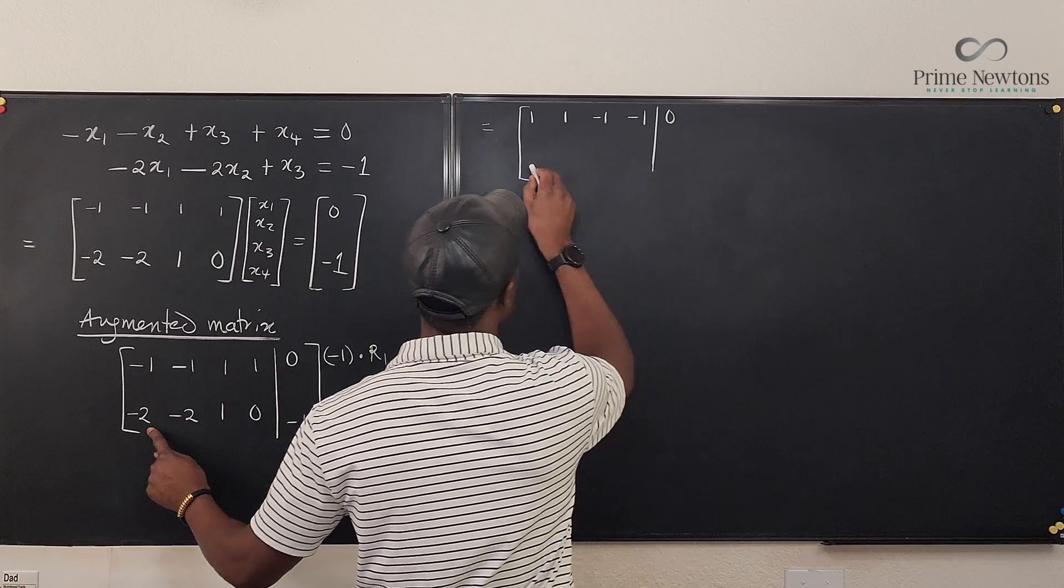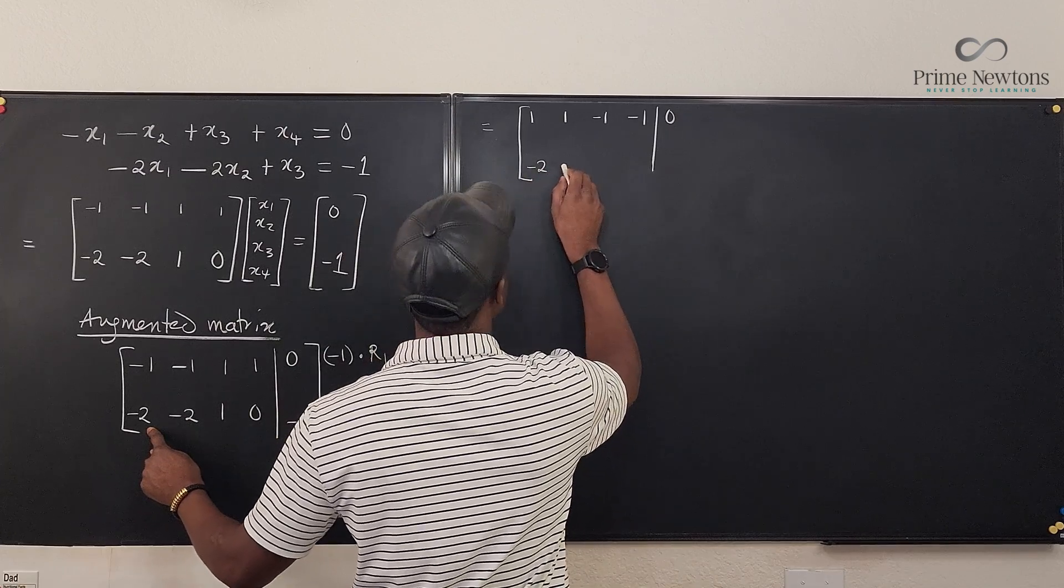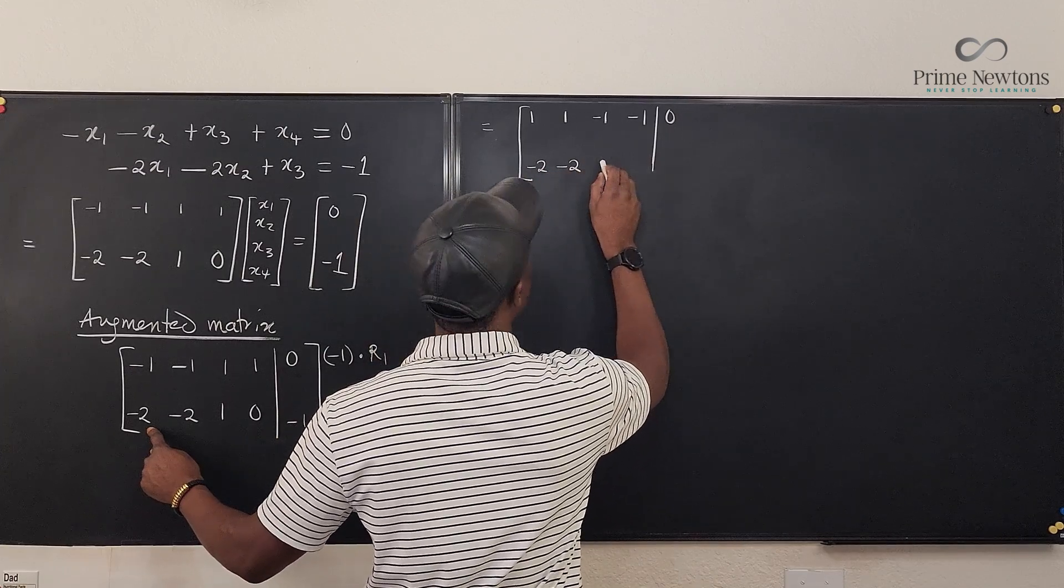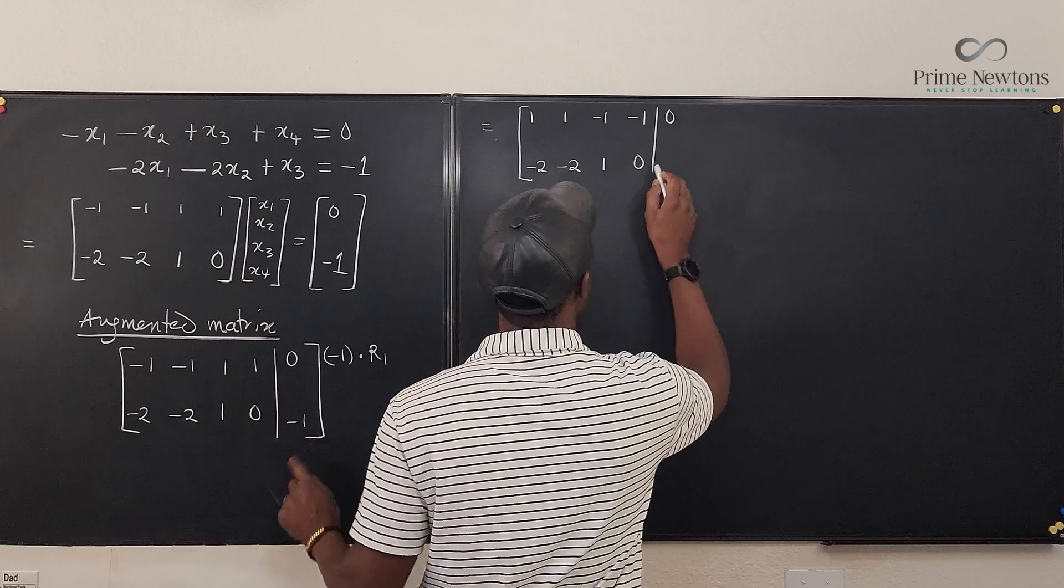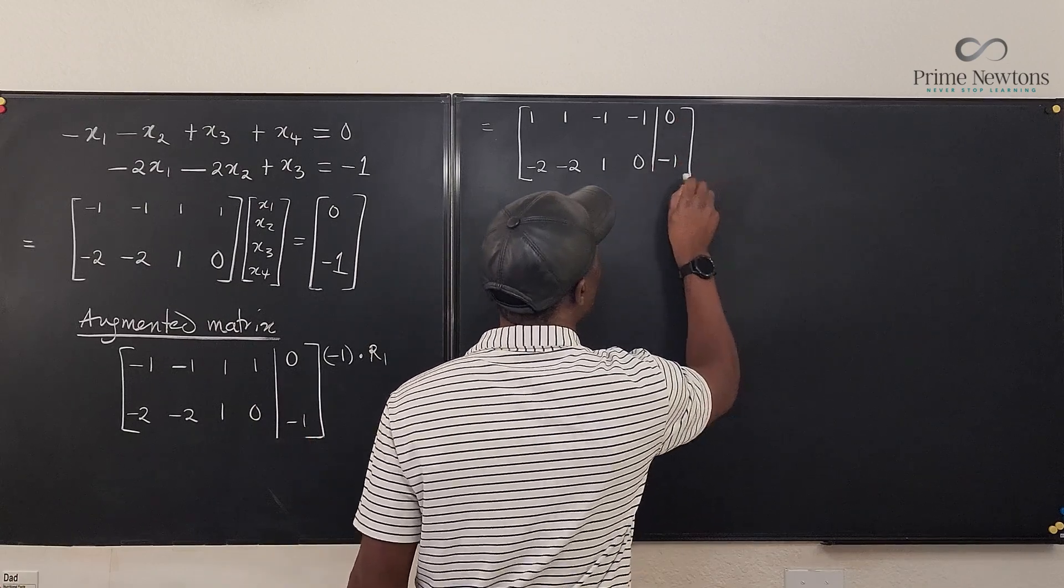Okay. The second row stays the same. It's going to be minus two, minus two. I have one, zero. And this stays as minus one.